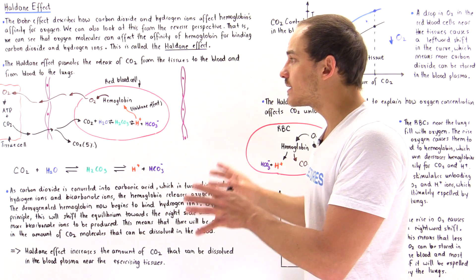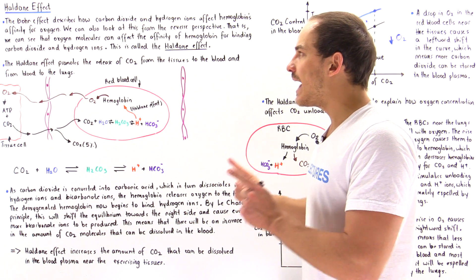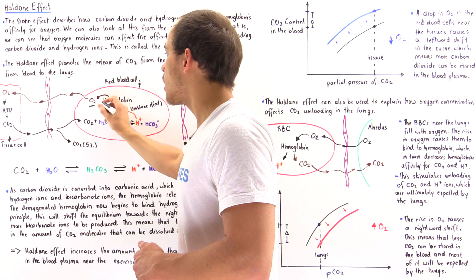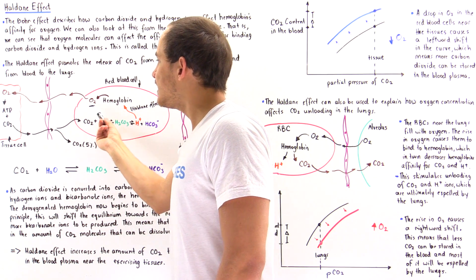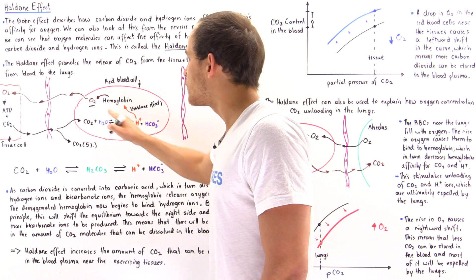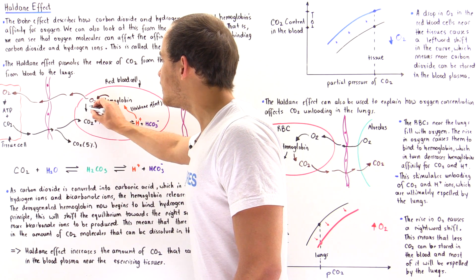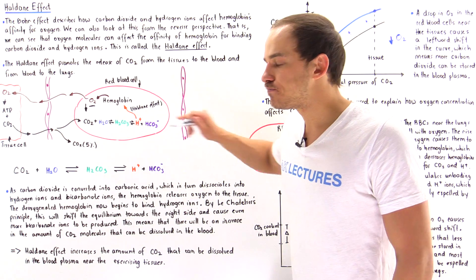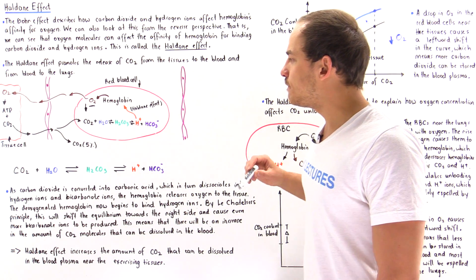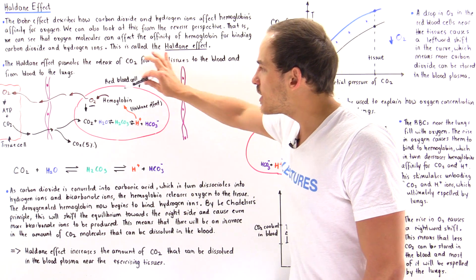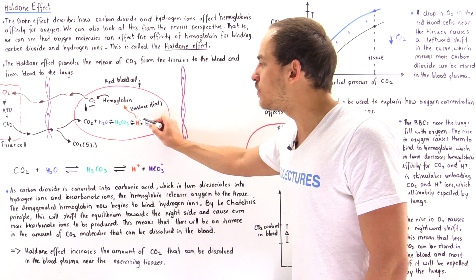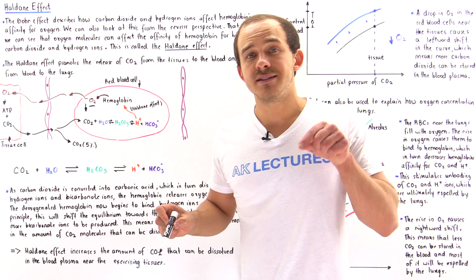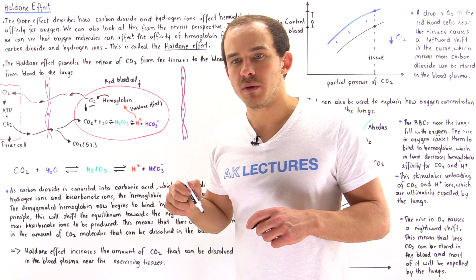This is where the Haldane Effect takes place. According to the Haldane Effect, if we decrease the concentration of oxygen in the red blood cells — because oxygen travels into the exercising tissue — that increases the affinity of hemoglobin for H+ ions. As hemoglobin's affinity for H+ ions increases, the hemoglobin begins to bind the H+ ions, and so the concentration of free H+ ions begins to decrease.